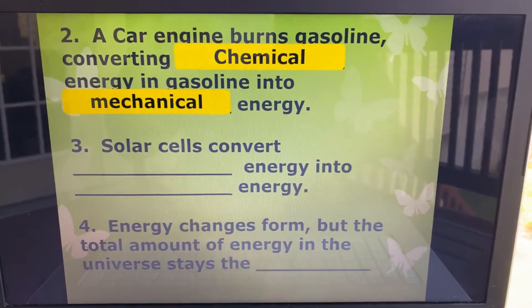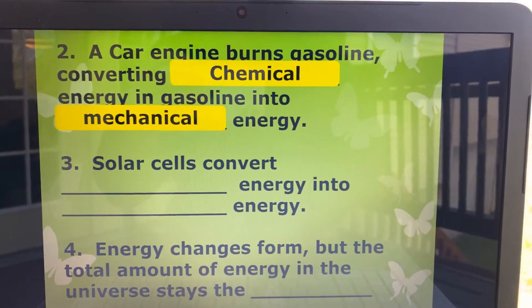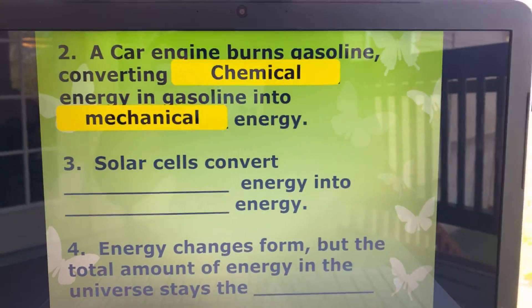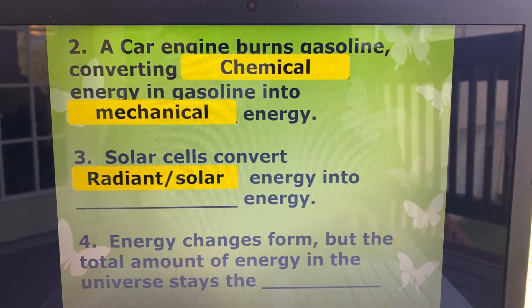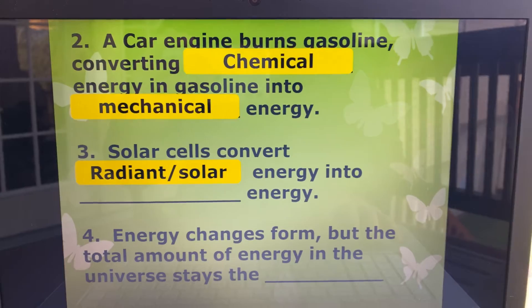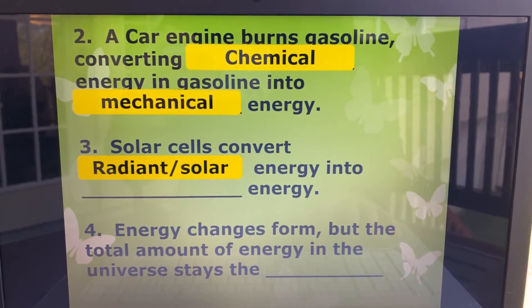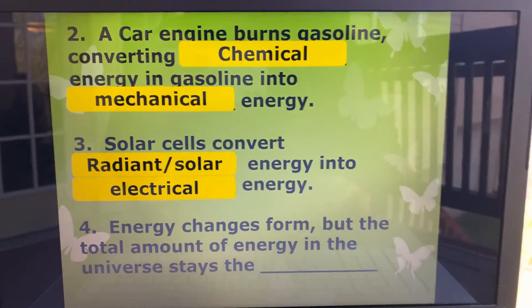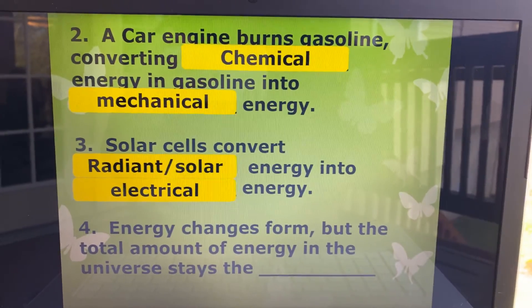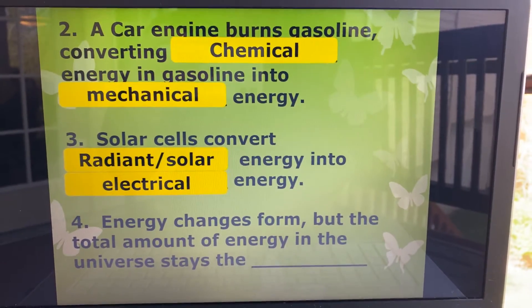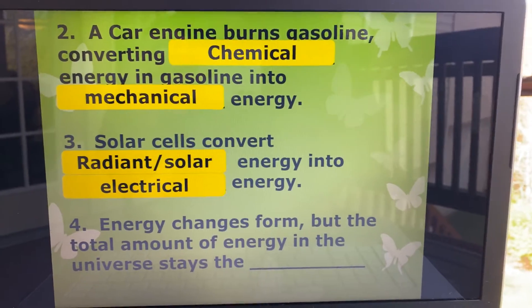Number three: solar cells convert blank energy into blank energy. Solar is from the sun, so radiant or solar energy — into what? If you have solar cells on your roof, they collect energy from the sun, actually charging a battery. Then you take that electrical energy and turn the light switch on in your house. So solar cells convert radiant or solar energy into electrical energy.